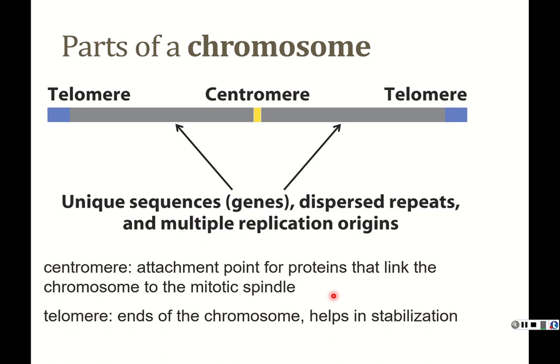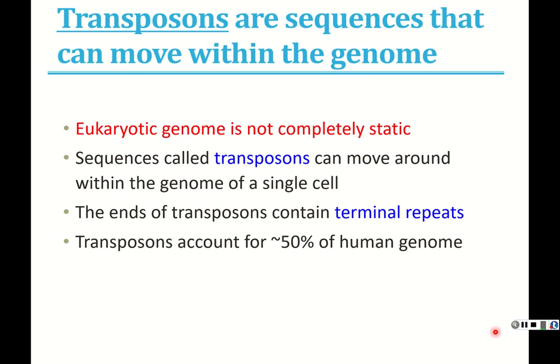Telomeres are just the ends of the chromosome, and these sequences help in stabilization — they protect the ends from unwinding or breaking off. Unlike bacteria or viral DNA, eukaryotic DNA is linear, so you have to protect the ends. Eukaryotic genomes are not completely static — they have transposons that can move around within the genome of a single cell. The ends of transposons contain repeat regions, and transposons account for an estimated 50% of the human genome.